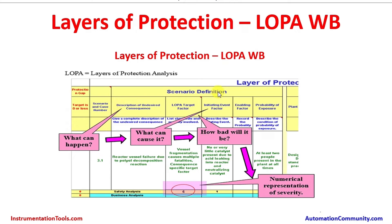This is the scenario definition, giving the scenario number and the next column is a description of the undesired consequence — what can happen. For example, in this slide, it is a reactor vessel failure due to polyol decomposition reaction. This is one scenario causing the risk.